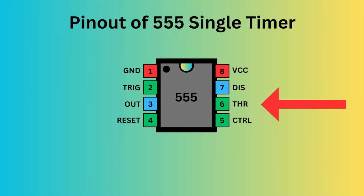Pin 6, the threshold pin, monitors the voltage of the capacitor in the circuit. Pin 7, the discharge pin, manages the timing capacitor's charge and discharge cycle. Pin 8, known as VCC, supplies power to the IC.